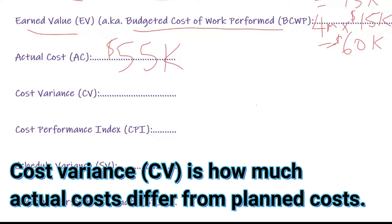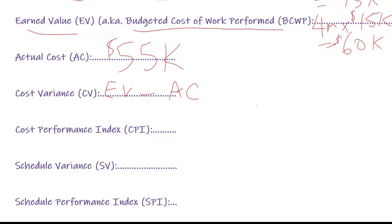Cost variance tells you how much you are varying from the original plan. To solve cost variance, the formula is earned value minus actual cost. Our earned value is $60,000 and our actual cost is $55,000, which gives us a positive $5,000. So our cost variance is positive — we're actually doing well.